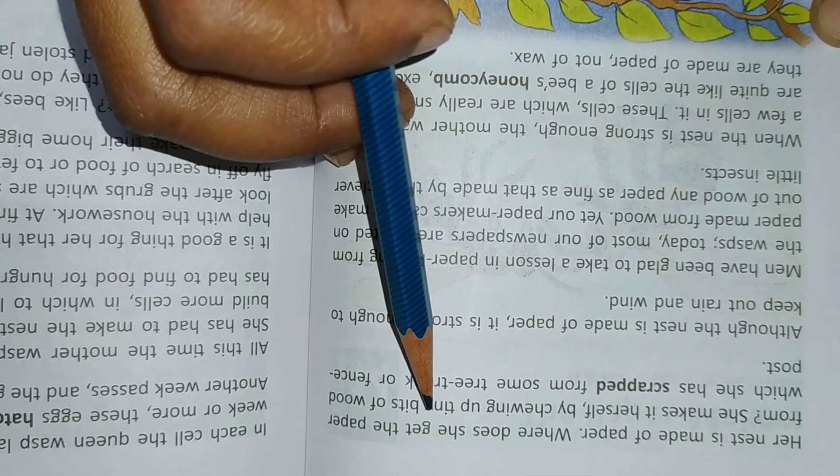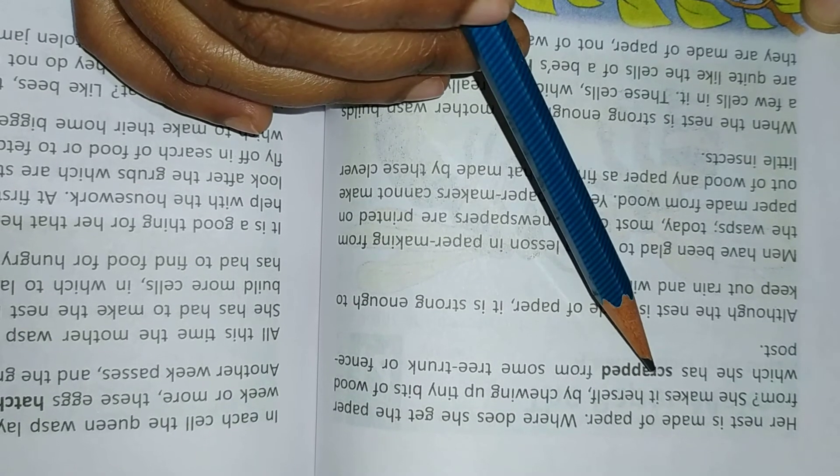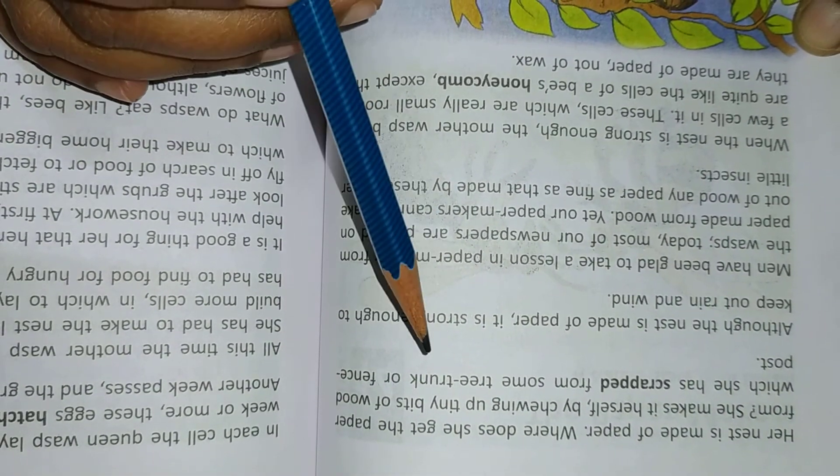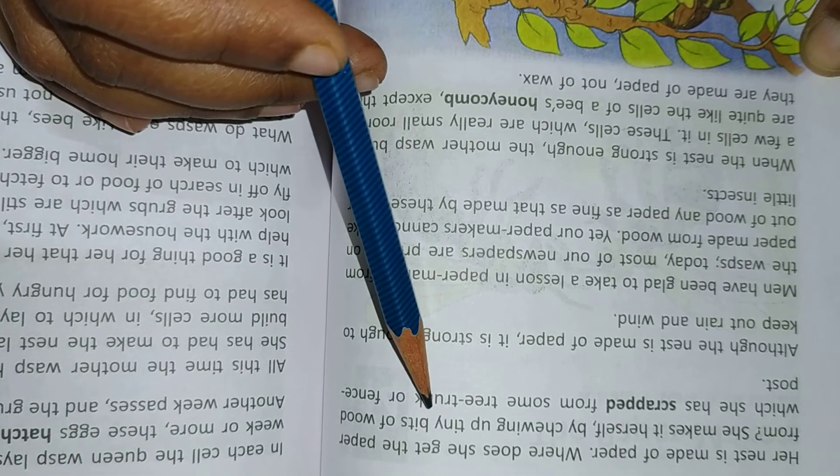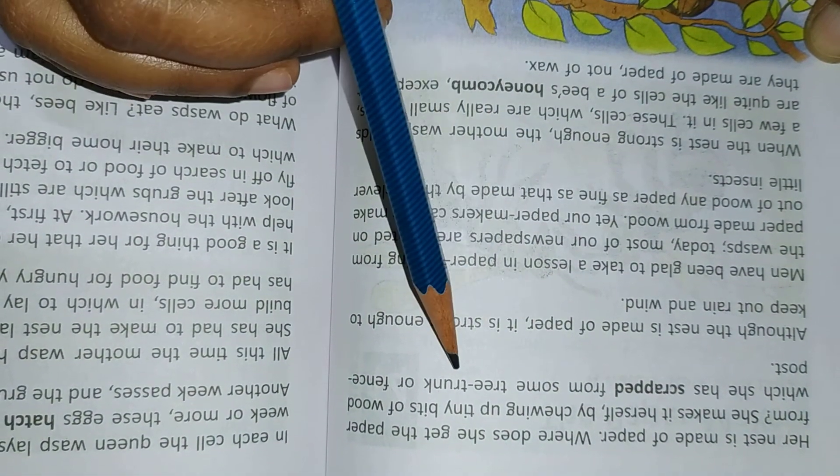Where does she get the paper from? She makes it herself by chewing up tiny bits of wood which she has scraped from some tree trunk or fence post.